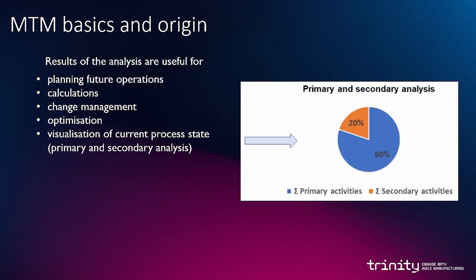The results of the analyses are useful for planning future operations, calculations, change management, and importantly the optimization of existing assembly systems and visualization of the current process state. The picture on the right shows primary and secondary analyses. Primary effort means effort which brings value in terms of customer benefit — shown in the blue field — and secondary effort which brings no benefit, shown in the orange field.